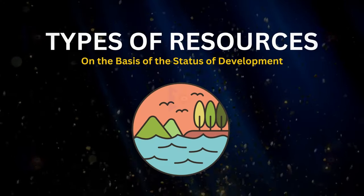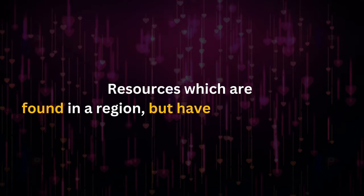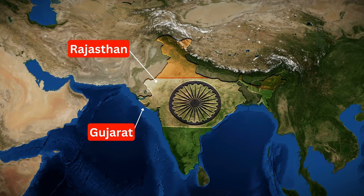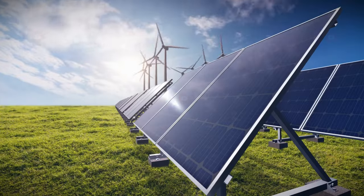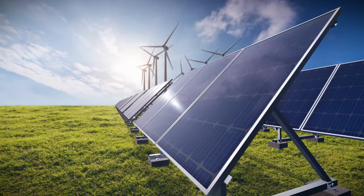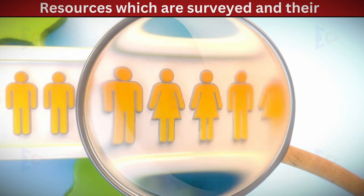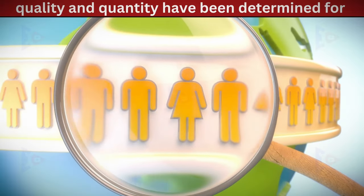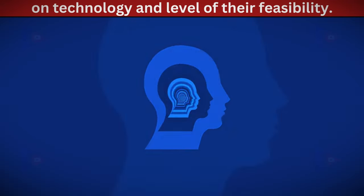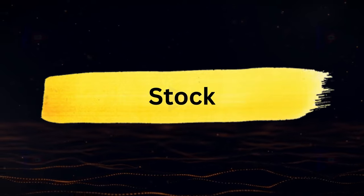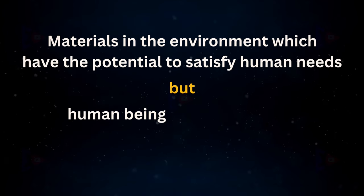On the basis of status of development: potential resources are found in a region but not yet being utilized. For example, the western parts of India, particularly Rajasthan and Gujarat, have enormous potential for wind and solar energy but have not been properly developed. Developed resources are those which have been surveyed and their quality and quantity determined for utilization; their development depends on technology and level of feasibility.